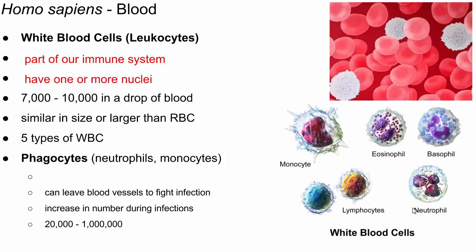Phagocytes engulf bacteria and other pathogens through phagocytosis and destroy them. They're almost amoeba-like in shape, using pseudopods to engulf pathogens — not just bacteria but also viruses. They are located throughout the body in various types of tissue, and their job is to destroy any pathogens. They can leave blood vessels to fight infections. They increase in number dramatically — from 20,000 to a million at the site of an infection — and engulf and kill bacteria.